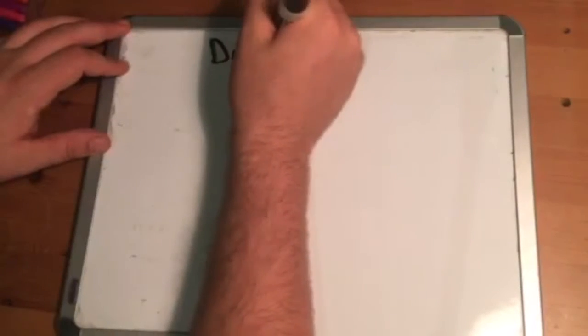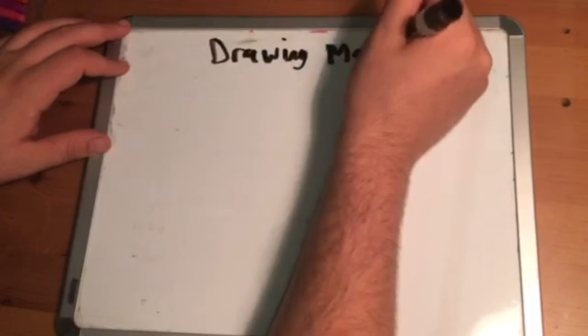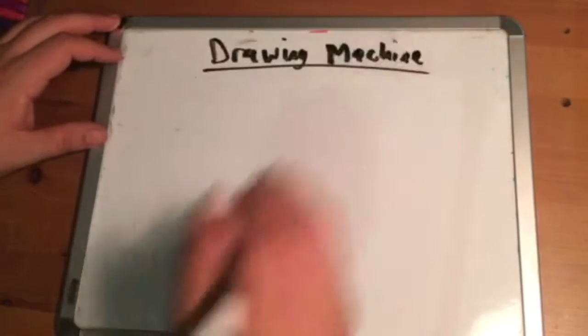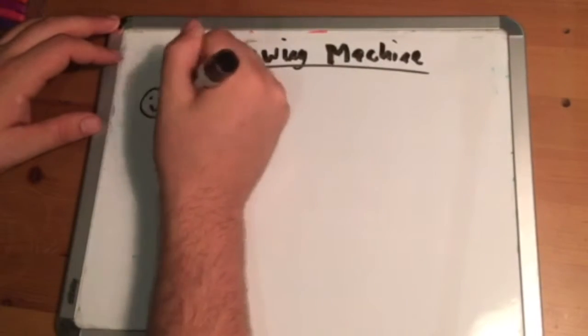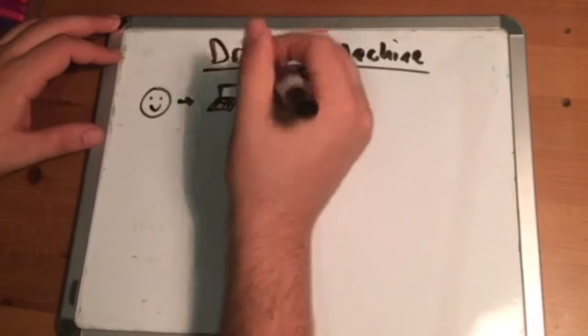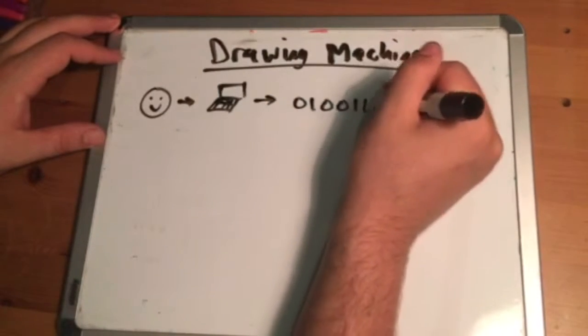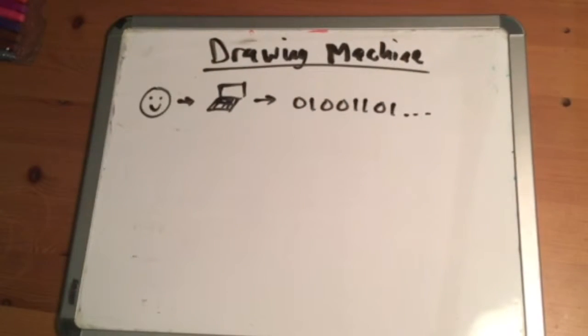Hi, this is Adam from AcreState, and right now we're going to go through People Programming Challenge number two. This is called Drawing Machine, and in this challenge we're going to explore how a computer interprets an image and represents it as numbers or code.